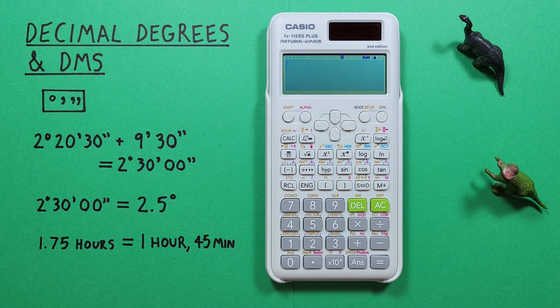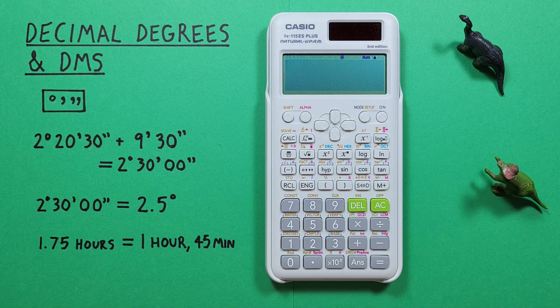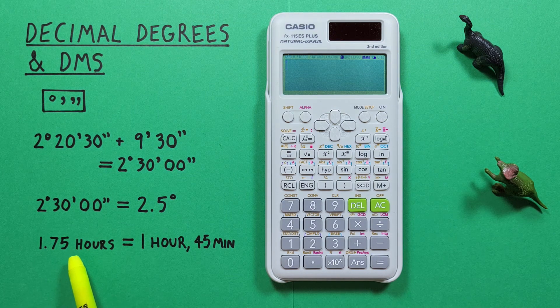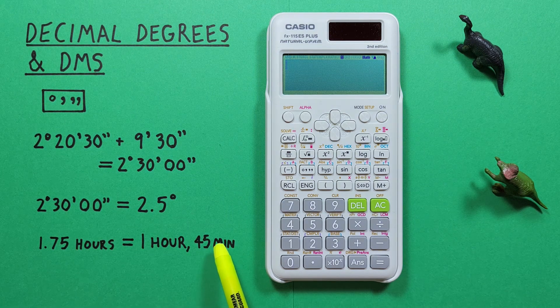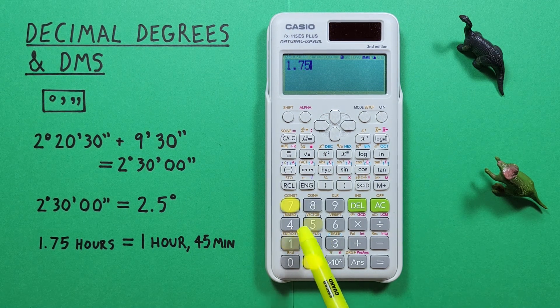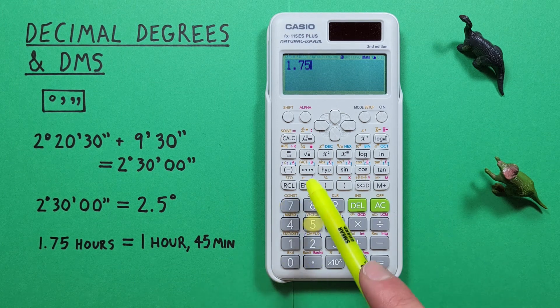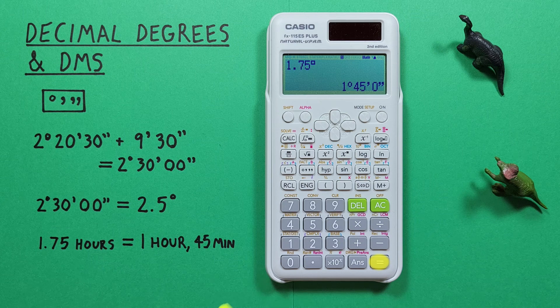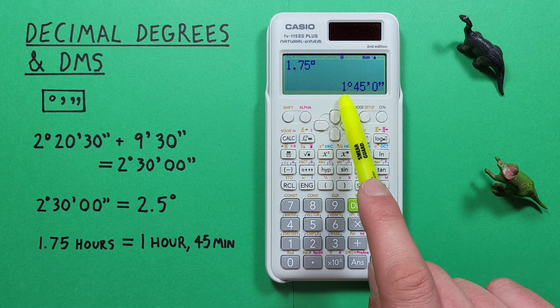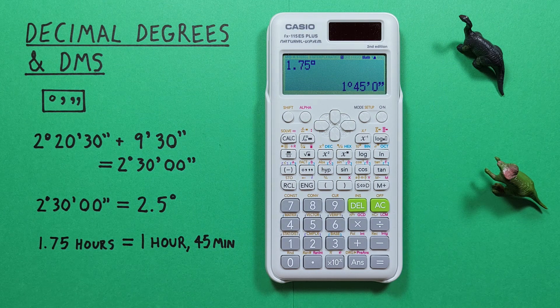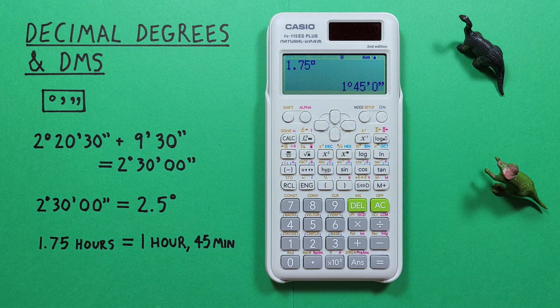This also helps us working with time. For example, if we had 1.75 hours and wanted to determine how many hours and minutes that was, we could do that by entering the 1.75, hitting the degree key and pressing equals and we see it's the same as 1 hour 45 minutes. All right, I hope this helps and good luck on those tests out there everybody!